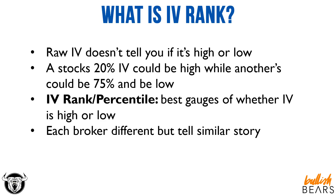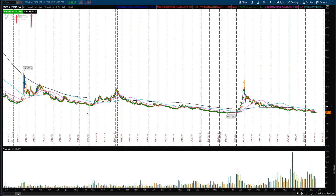IV rank and IV percentile are very similar — they have their positives and negatives — but either way, rank and percentile will do much better in telling you the story of whether IV is high or low rather than using raw implied volatility. Now I'm going to show you a couple of examples of implied volatility for a specific stock and then its IV rank so you can see the difference.